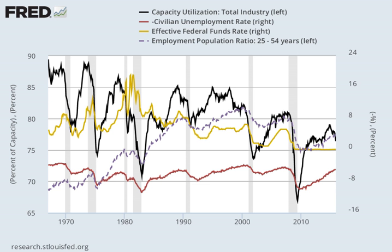Capacity utilization is the extent to which an enterprise or a nation uses its installed productive capacity. It is the relationship between output that is produced with the installed equipment, and the potential output which could be produced with it, if capacity was fully used.